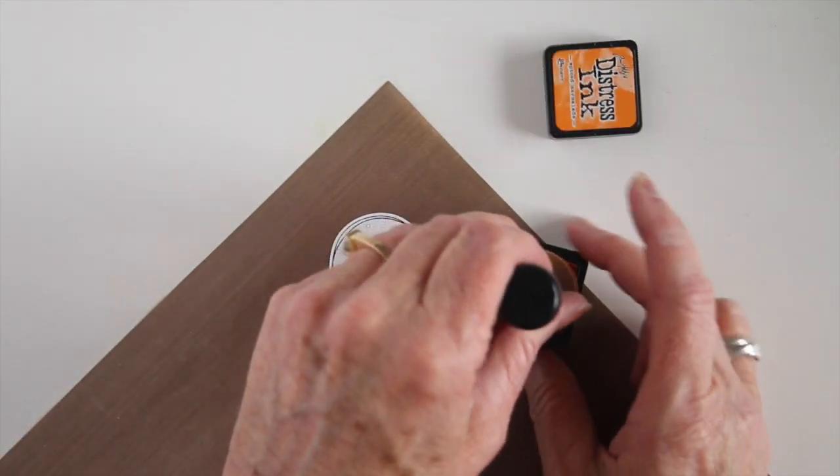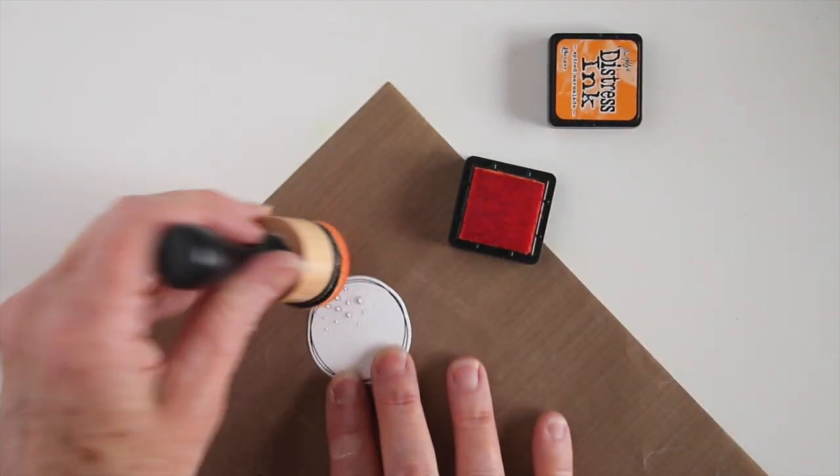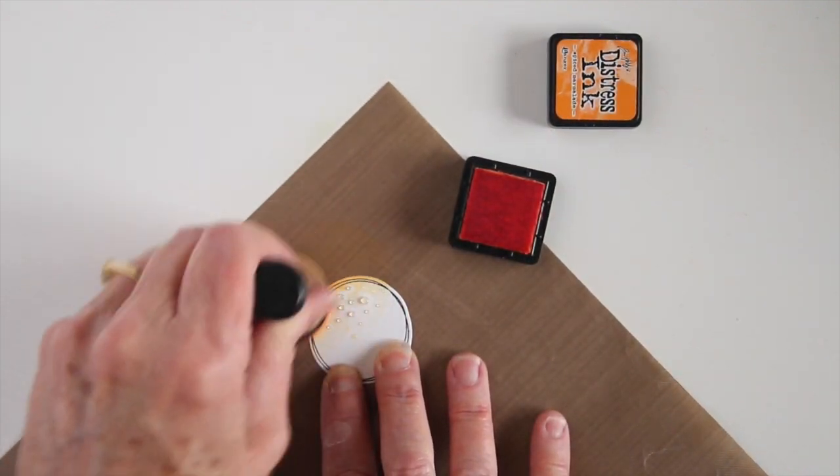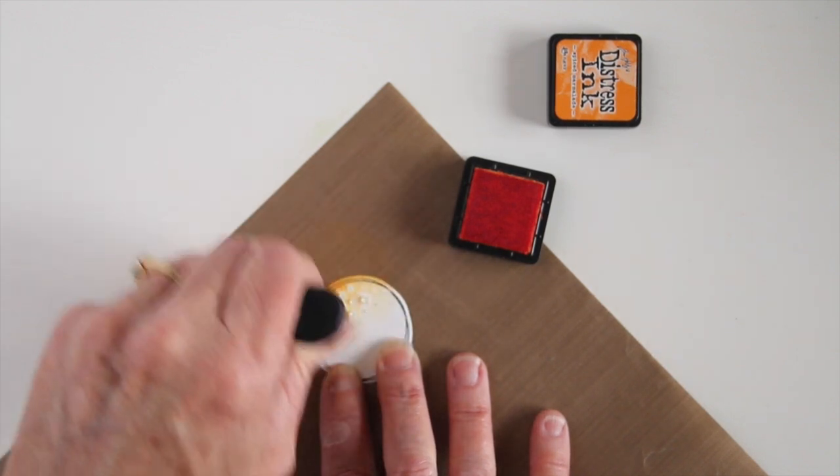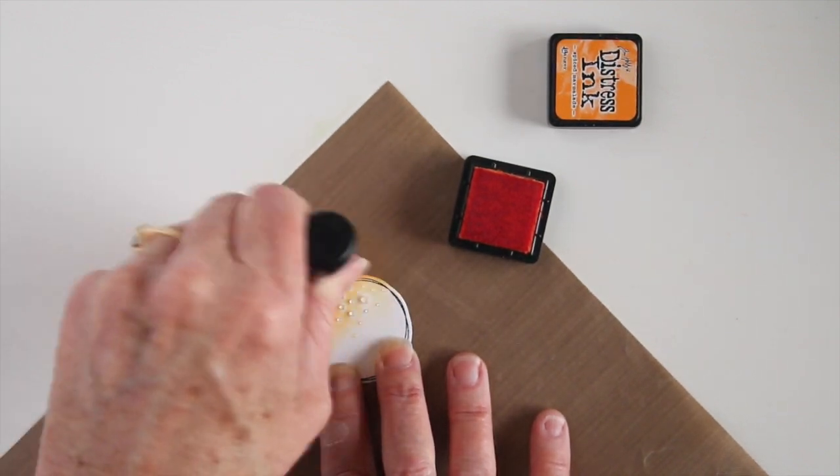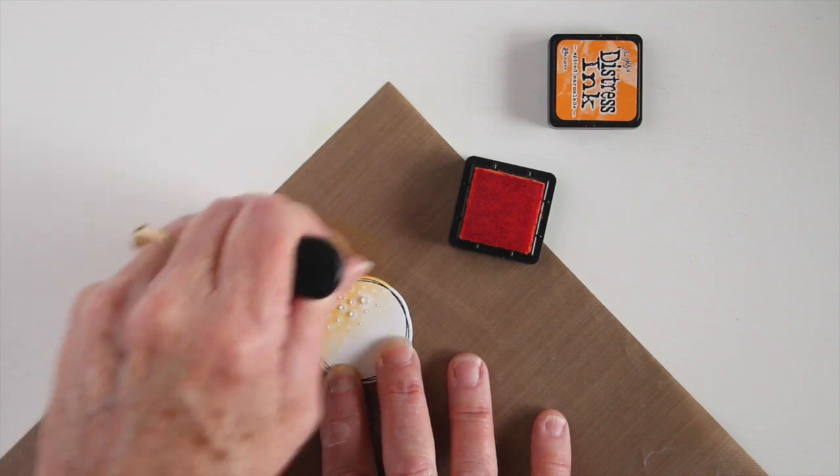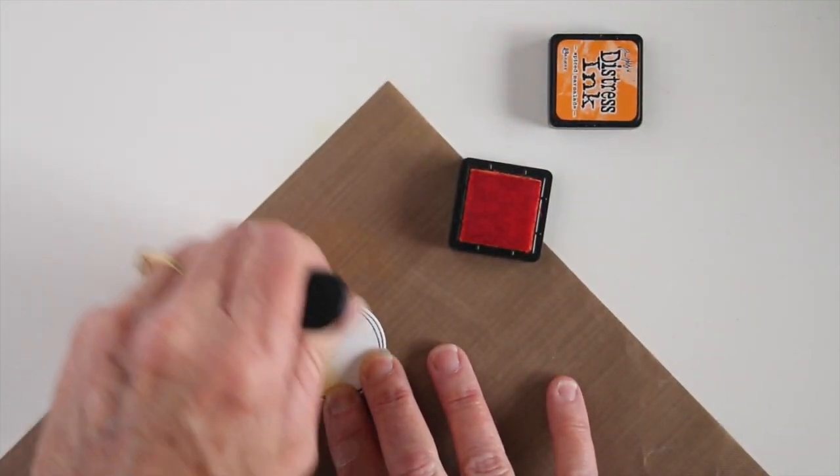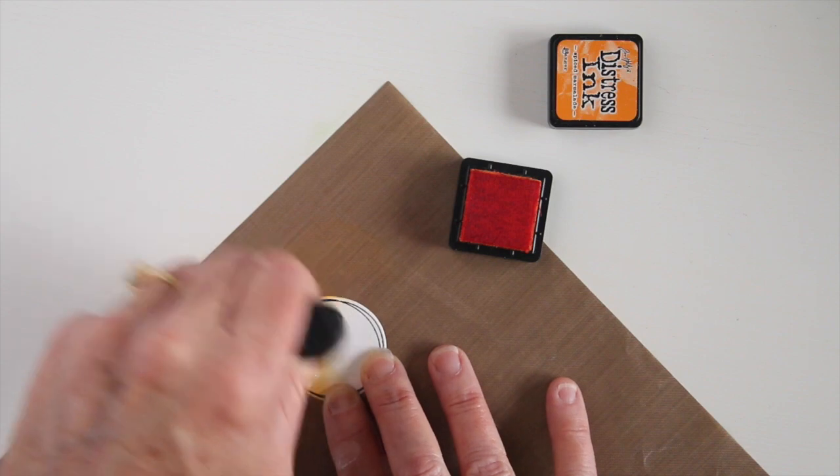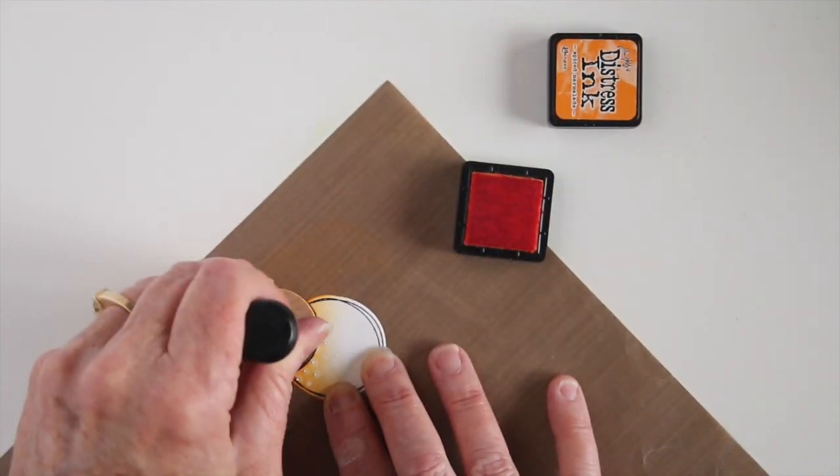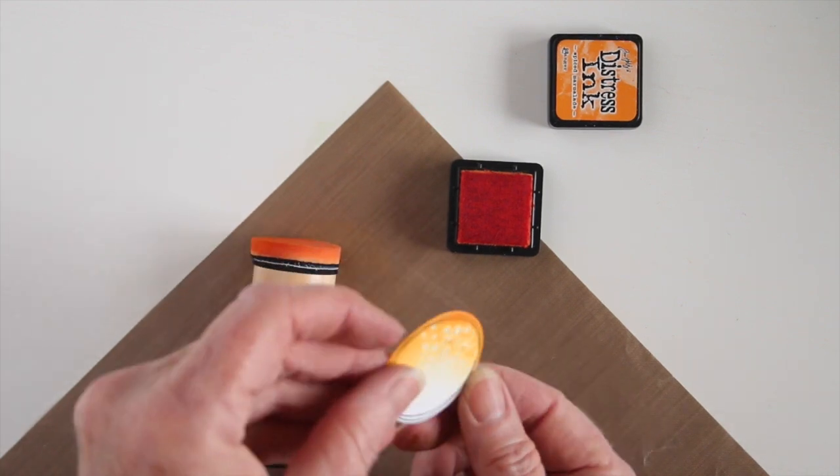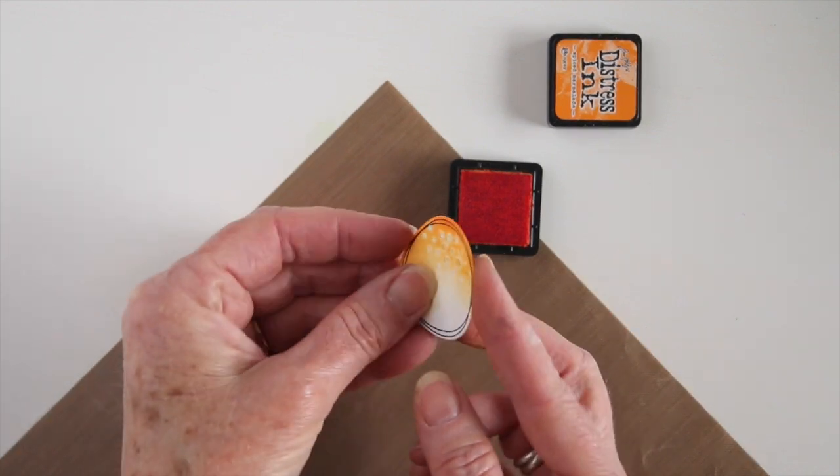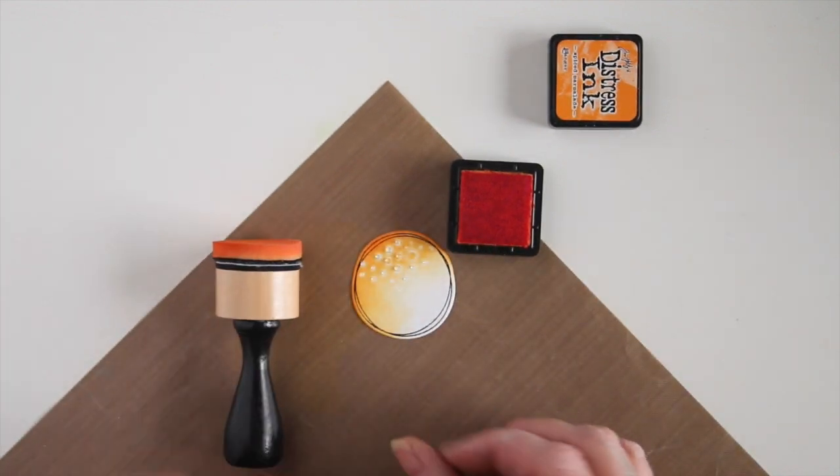Now that my Glossy Accents is dry I'll go ahead and start using my Spiced Marmalade with my blending tool. I want to try to grab kind of the edge of the blending tool and get into those little small areas. The Glossy Accents does sit up a little bit higher than all the other masks that I've shown you. You can also pounce your blending tool directly onto your paper just to get into those little areas. The Glossy Accents gives you a really nice shiny look when you're all done plus your resist.